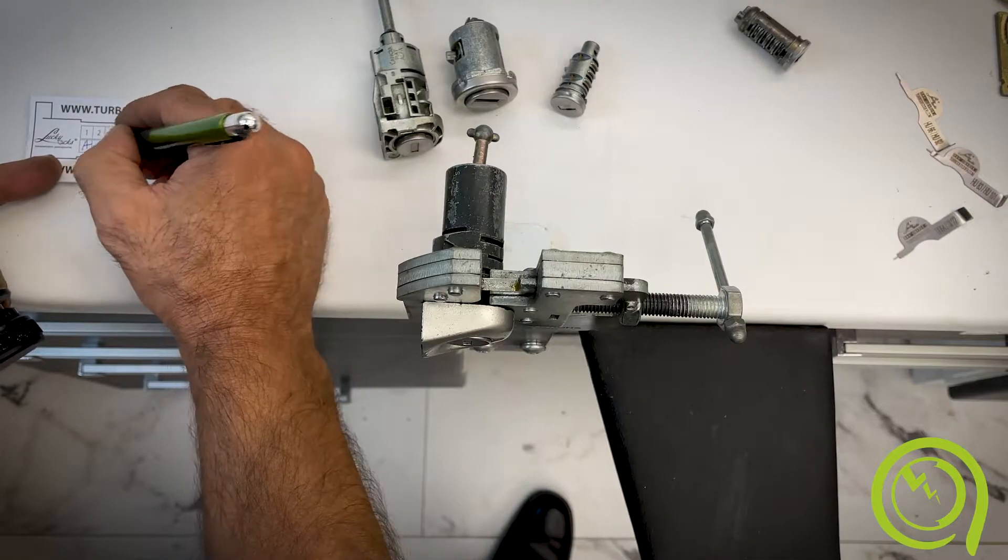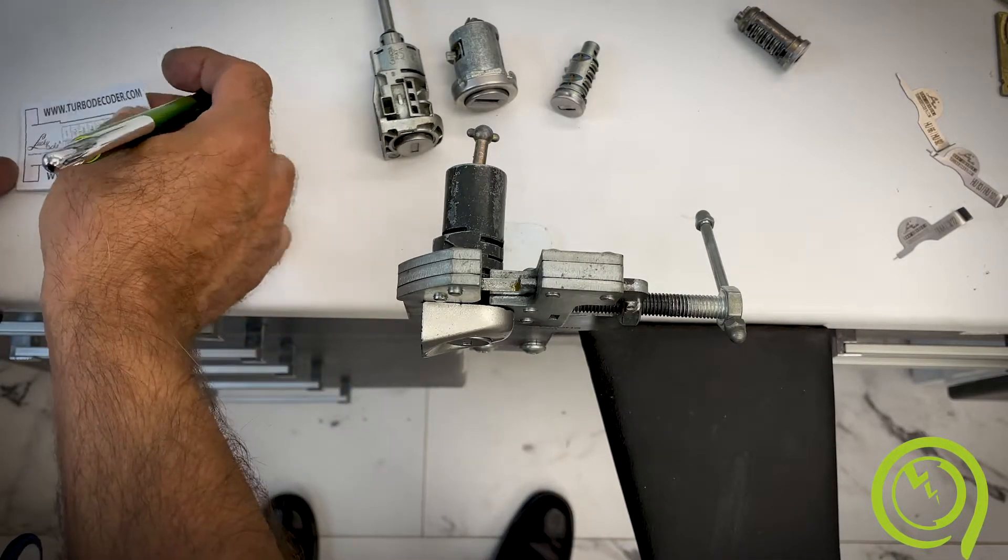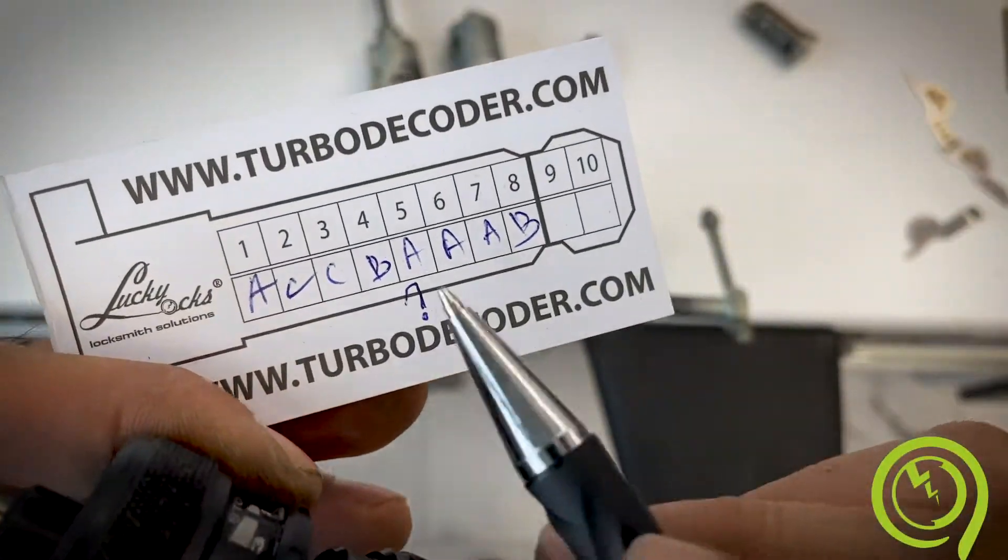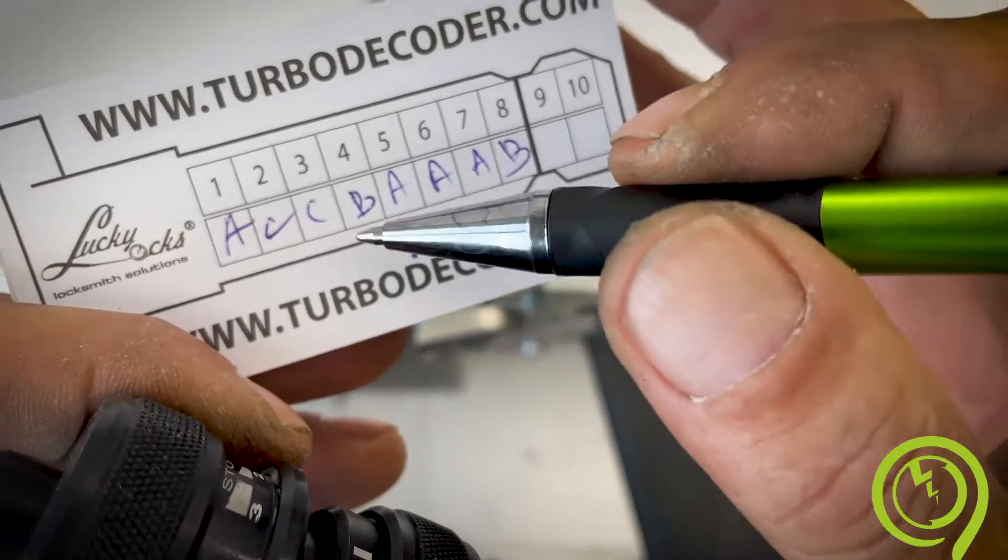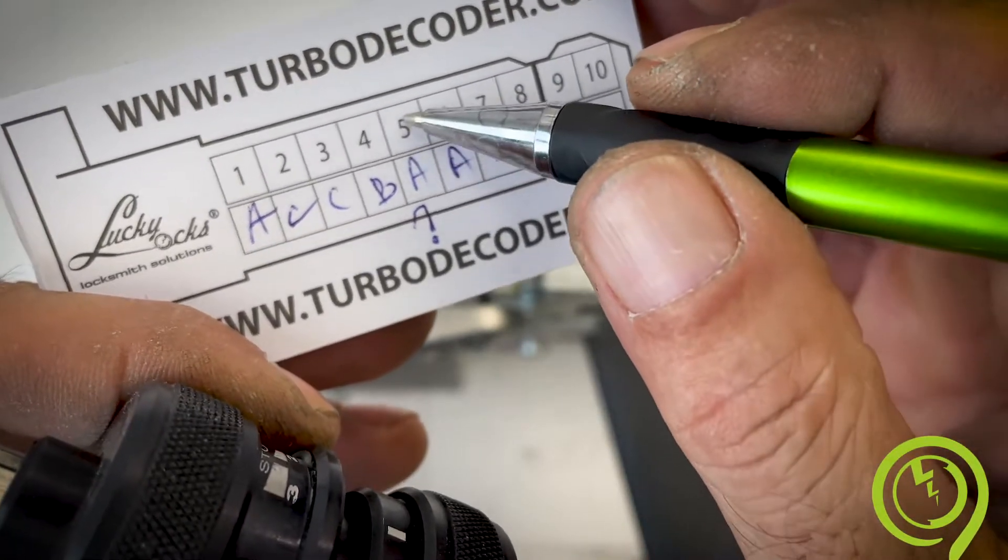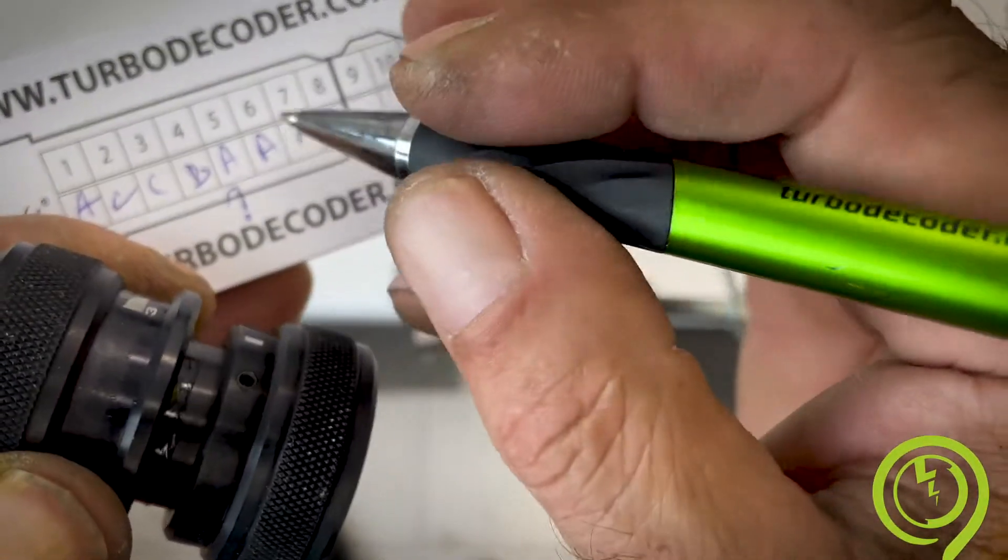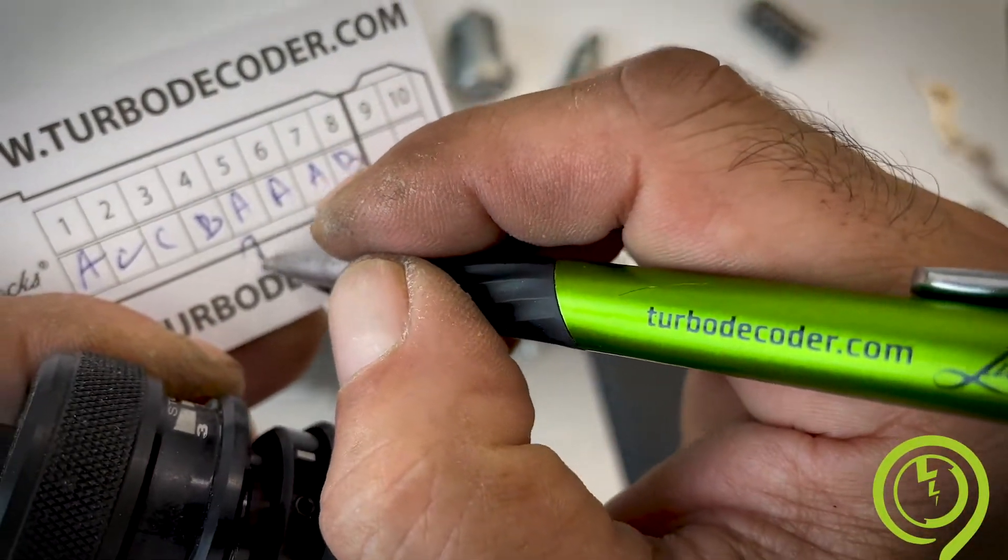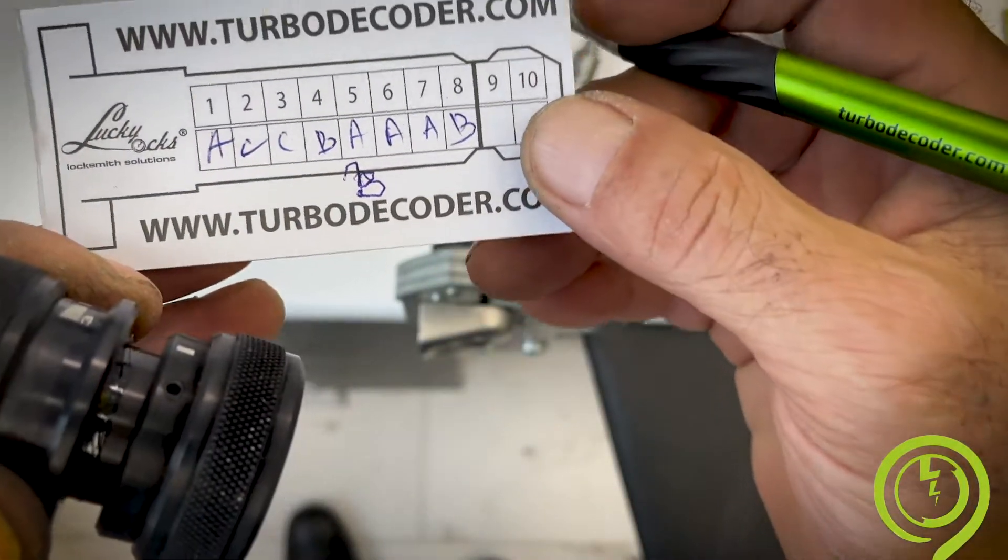C, B, A, B. Okay, I will cut first these numbers or these letters. If I didn't open the lock on the fifth pin, I will cut one position down, which is B, and should open the lock.